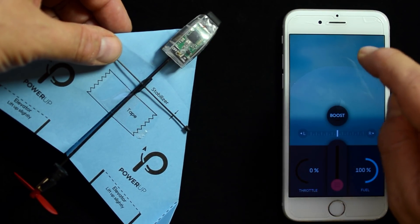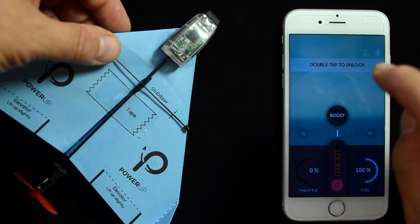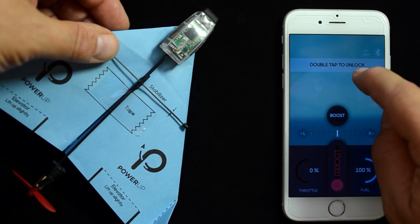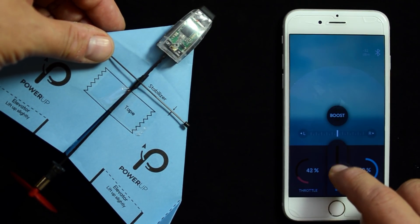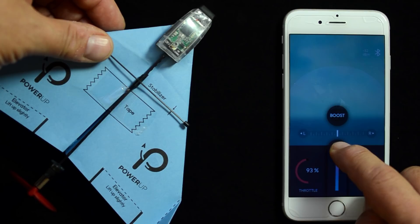Double-tapping again will relock the throttle. To increase thrust, double-tap and increase the thrust level. This will cause the propeller